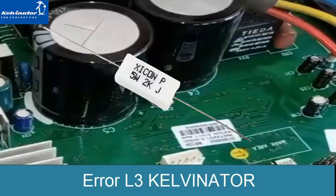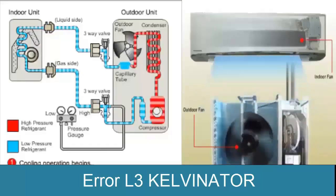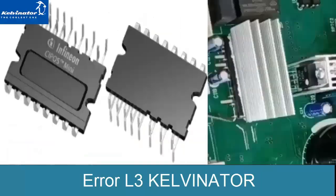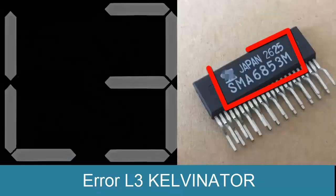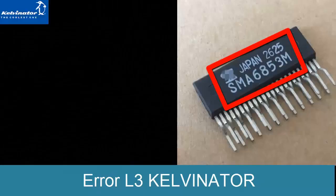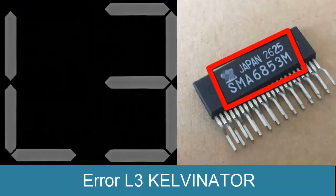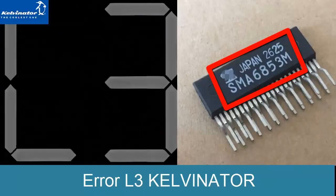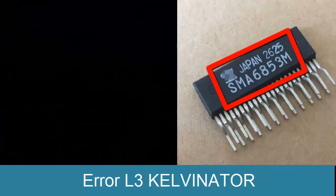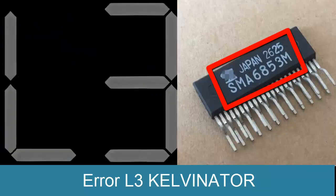Step 7: Ensure that the IPM output pins have continuity with the connector where the outdoor unit's fan is connected. Step 8: With the electronic board powered on, check the voltage present in the IPM electronic integrated circuit. To do this, use a multimeter set to direct or continuous voltage. Compare the corresponding pins, checking the datasheet or serial number of the IPM integrated circuit.